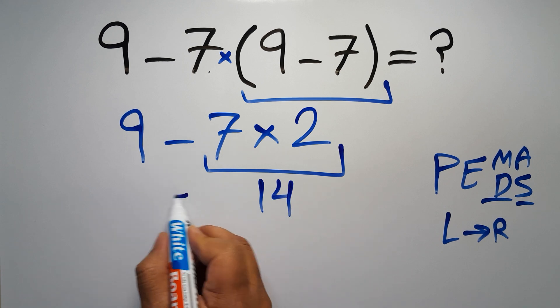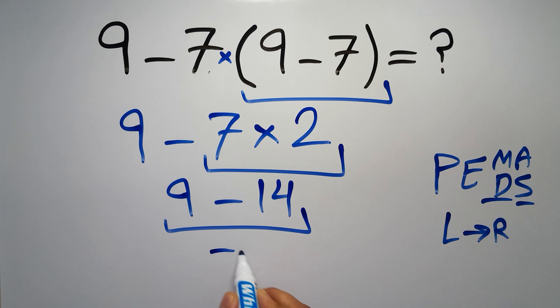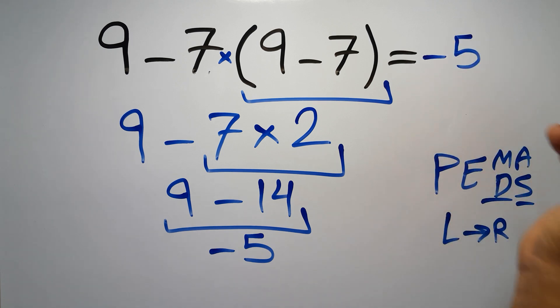So 9 minus 14, which equals negative 5, and this is our final answer to this problem. The correct answer is negative 5.